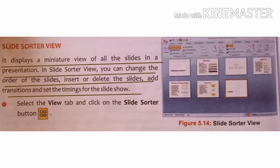The second type of view is Slide Sorter view. It displays a miniature view of all the slides in a presentation. In Slide Sorter view, you can change the order of the slides, insert or delete slides, add transitions, and set the timing for the slide show.